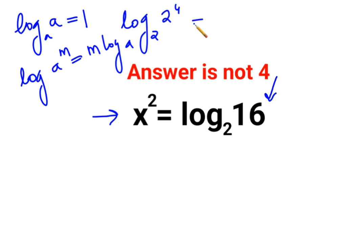So using the same logic, I can take the 4 down and we have log 2 to the base 2, which according to this logic becomes 1. So we have 4 multiplied by 1. So the answer for this one is supposed to be 4.